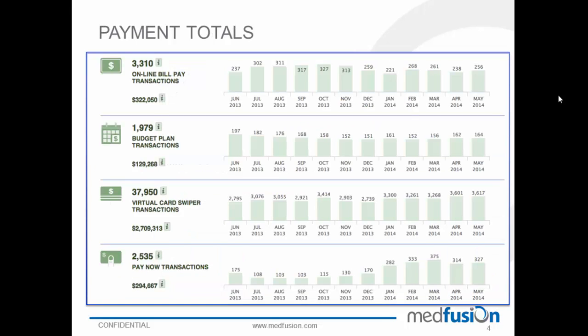In the solutions area of the report, we show totals for each of the solutions. The first four are payment totals, covering the four types of payments offered via the portal: online bill pay transactions, budget plan transactions, virtual card swiper transactions, and pay now transactions. We show a total of all 12 time periods on the right, as well as a total dollar figure for those 12 time periods. Bars on the right-hand side indicate how many transactions occurred in each time period, and this can be filtered to quarters, days, and weeks as well. It's important to know that the totals on the left represent the current time period the report is filtered to — so if filtered to quarters, it would be the total for those 12 quarters.